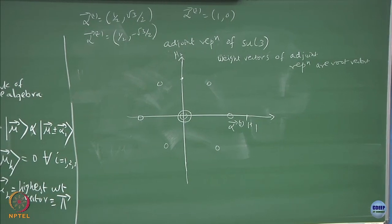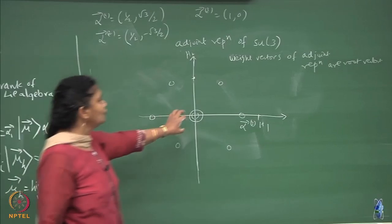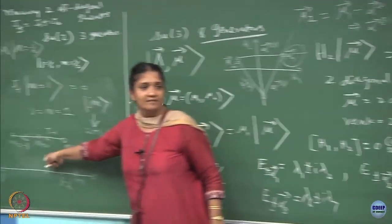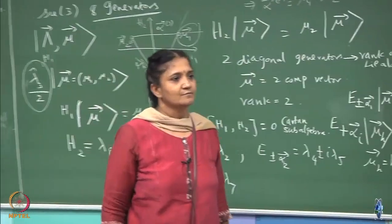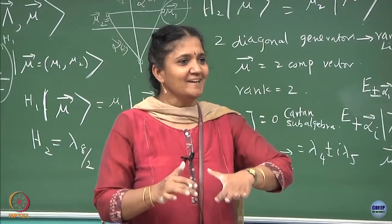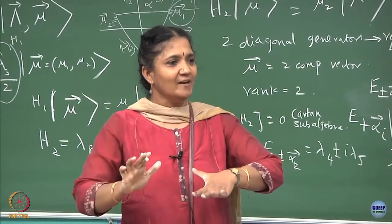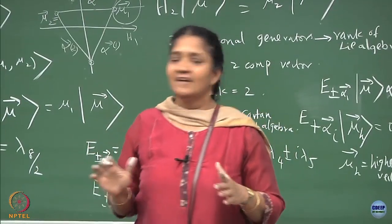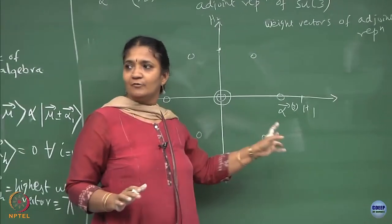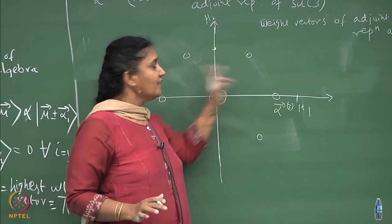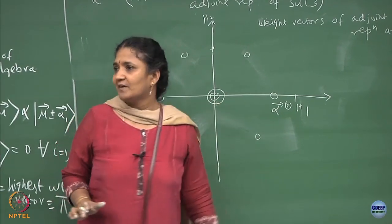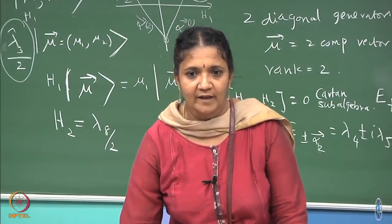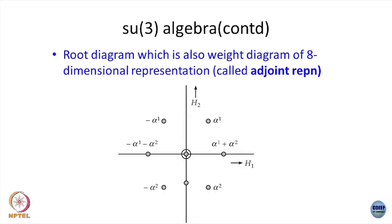The origin is a zero weight. You will have two zero weight states in the adjoint representation for SU(3), and in the case of SU(2) you will have one zero weight state in the adjoint representation. So today I have taught you the defining representation and taken you through the analog of the regular representation — what is called the adjoint representation. The interesting thing is the number of points on this weight diagram turns out to be 8, and the origin has two zero vectors.